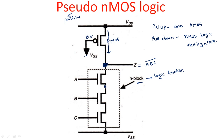Pseudo NMOS logic means the pull-up transistor is a fixed PMOS transistor and the pull-down is a number of NMOS transistors depending on the logic function. It is a partial NMOS logic realization — half NMOS, half PMOS — not complete NMOS. We are replacing the depletion-mode pull-up transistor in standard NMOS circuits with a PMOS transistor with its gate connected to VSS.